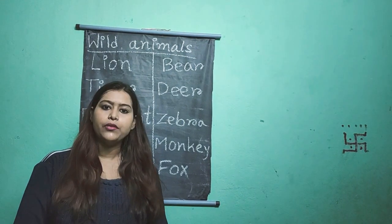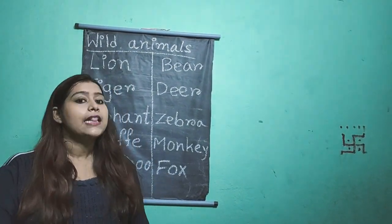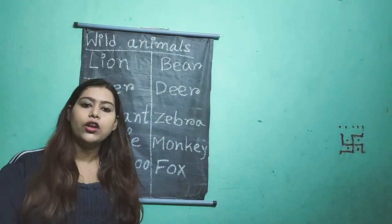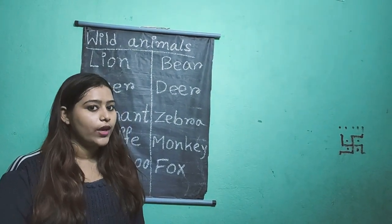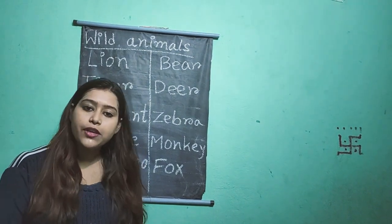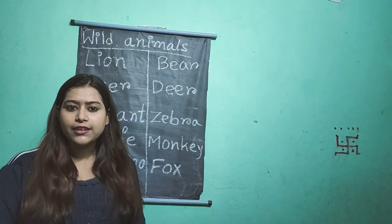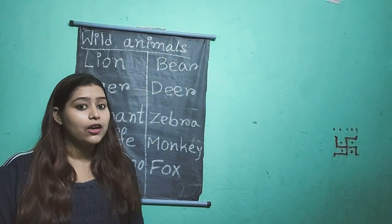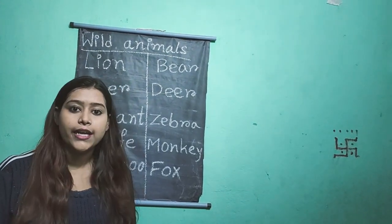First we will learn about wild animals. So what are wild animals? The animals who live in jungle or forest are known as wild animals. Even they search their food by themselves. Have you seen ever that a tiger is chasing a deer? A tiger always chases a deer for their food only.